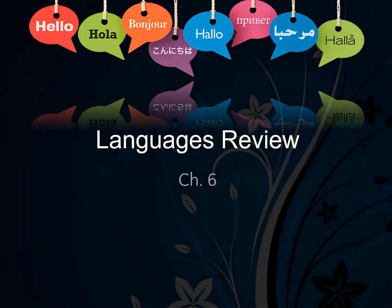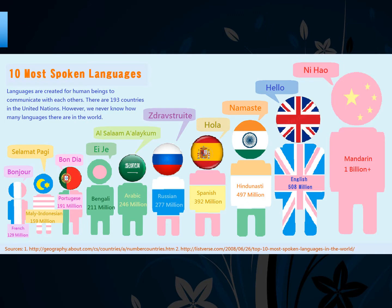For the second part of our culture unit, we are going to review language. Here is a great infographic about the most spoken languages. You can see that the most spoken first language in the world is Mandarin Chinese.